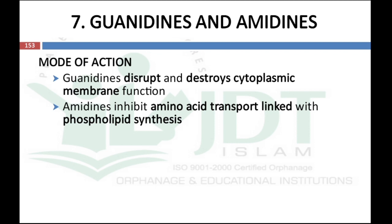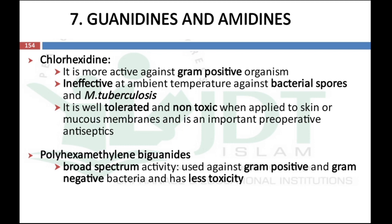The next group is guanidines and amidines. Guanidines disrupt and destroy cytoplasmic membrane function, while amidines inhibit amino acid transport linked with phospholipid synthesis. Chlorhexidine and polyhexamethylene biguanides are examples. Chlorhexidine is more active against gram-positive organisms and is ineffective at ambient temperature against bacterial spores and Mycobacterium tuberculosis. However it is well tolerated and non-toxic when applied to skin or mucous membrane and is an important pre-operative antiseptic. Polyhexamethylene biguanides are broad-spectrum disinfectants active against gram-positive and gram-negative bacteria with low toxicity.